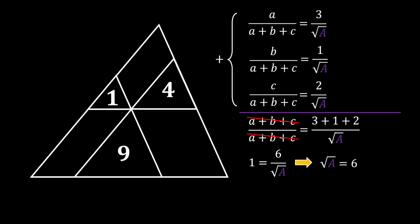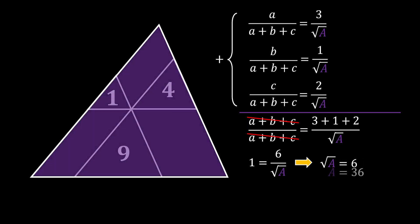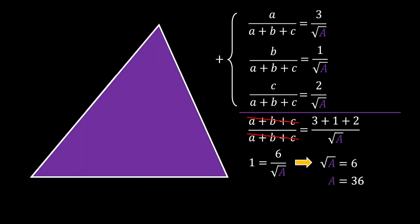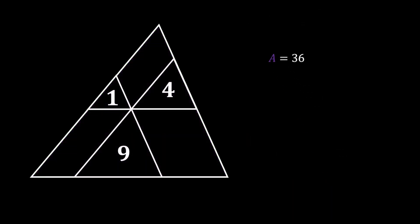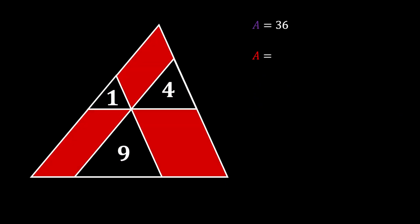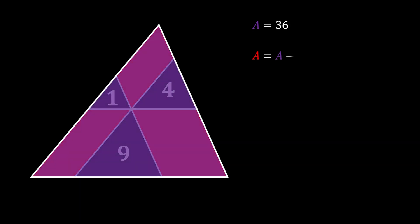After squaring both sides, we get that the area of our big triangle is equal to 36. Now it is pretty easy for us to find this red shaded area.